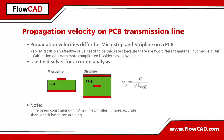On a PCB, we typically distinguish between two different conductor configurations: microstrip and stripline. On a microstrip, the conductor has only one reference plane, while on a stripline, the conductor is embedded between two reference planes.